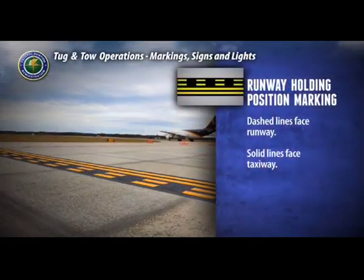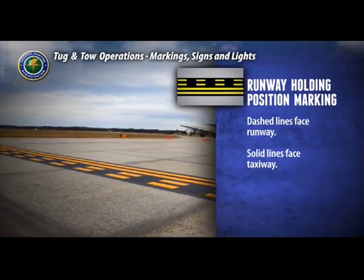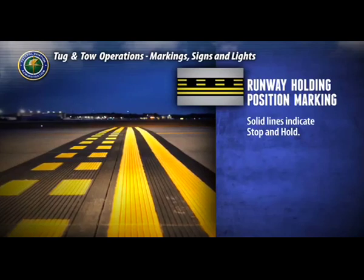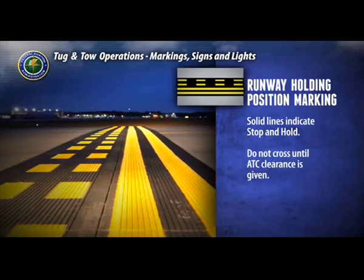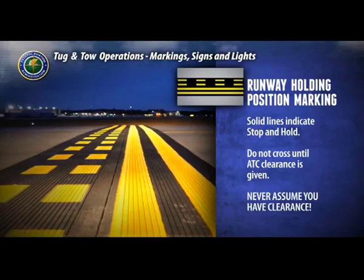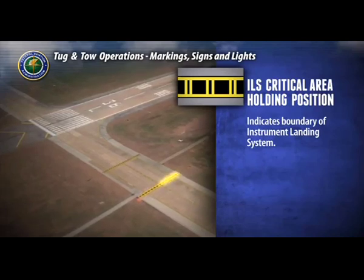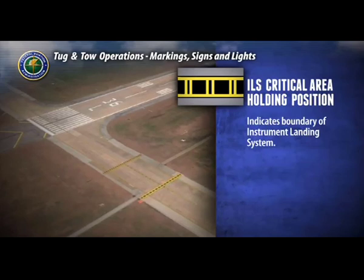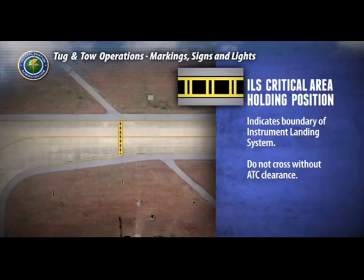The dashed lines will be on the side toward the runway, and the solid lines will be on the side toward the taxiway. The solid lines indicate that you are to stop and hold at this marking, not crossing until you receive clearance from air traffic control. Never assume you have clearance. Always wait for air traffic control instructions.